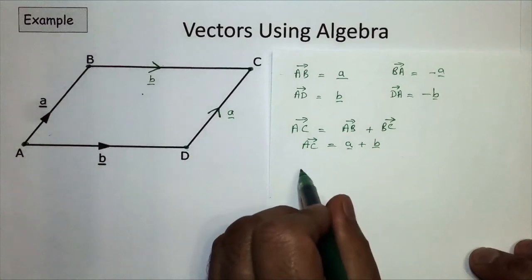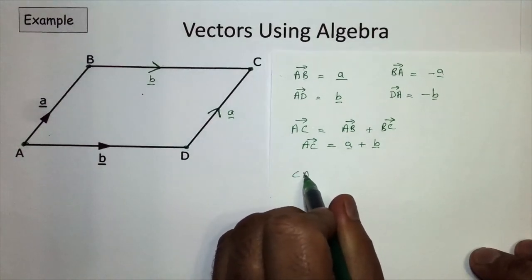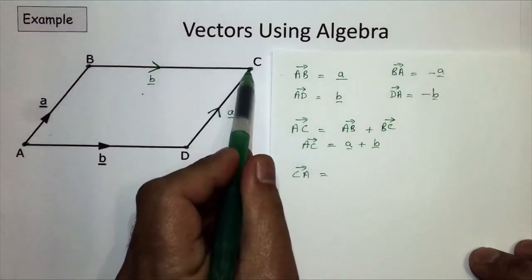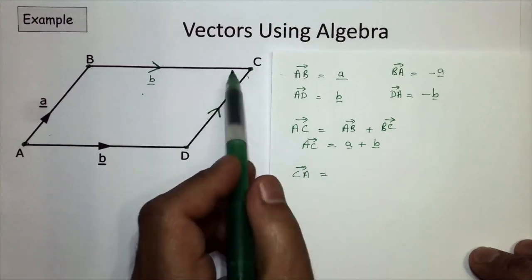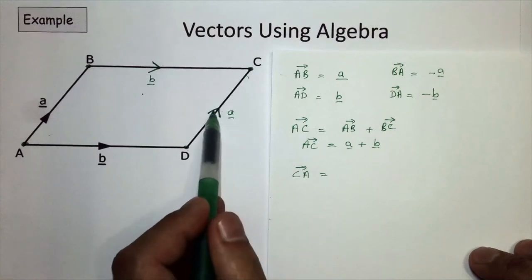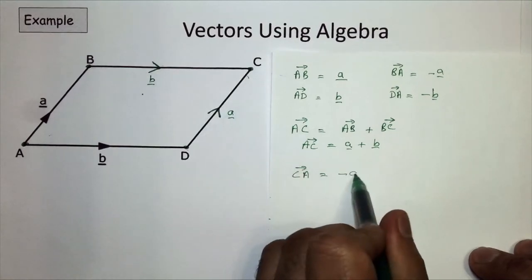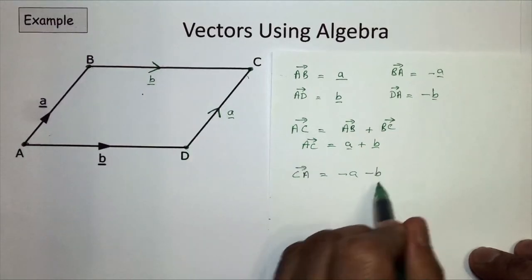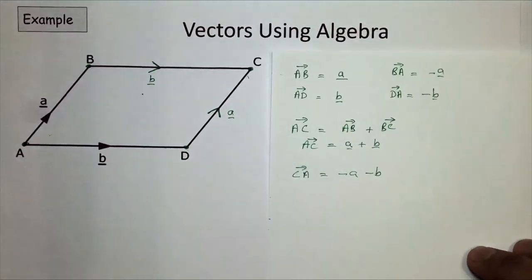Going the other way, C to A - following the path the other way - the resultant vector should give the same answer but opposite. This time it'll be minus a, because I'm going in the opposite direction to that arrow, so that's minus a, and then D to A will be minus b. So C to A is minus a minus b - going in the opposite direction.